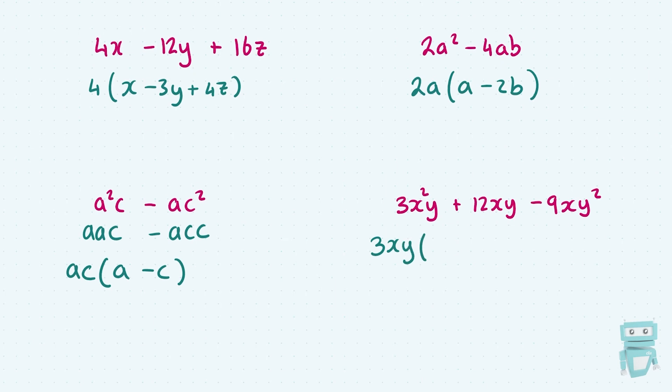So let's go ahead and divide in 3xy into 3x squared y, leaves me with just x, because the 3 into 3 divides out, the y into y divides out, and x into x squared leaves me with x. And then I divide my 3xy into 12xy, which just goes a solid 4 times, so I get x plus 4 here. And then I divide my 3xy into my minus 9xy squared. So 3 into minus 9 goes minus 3 times, and xy into xy squared leaves me with y.